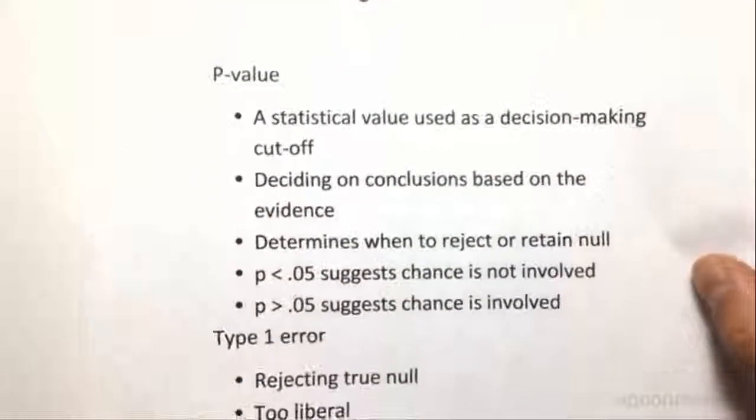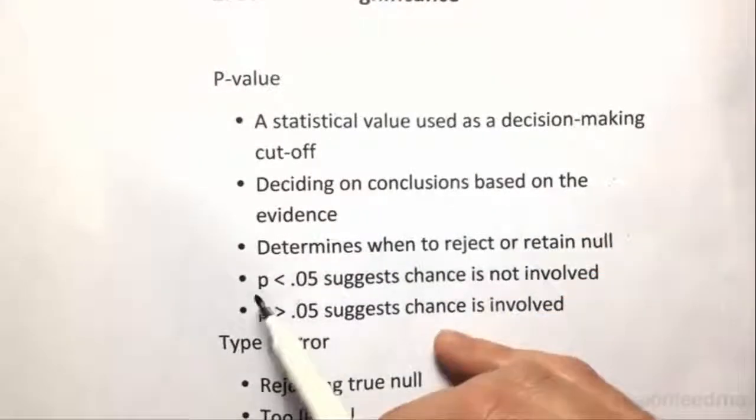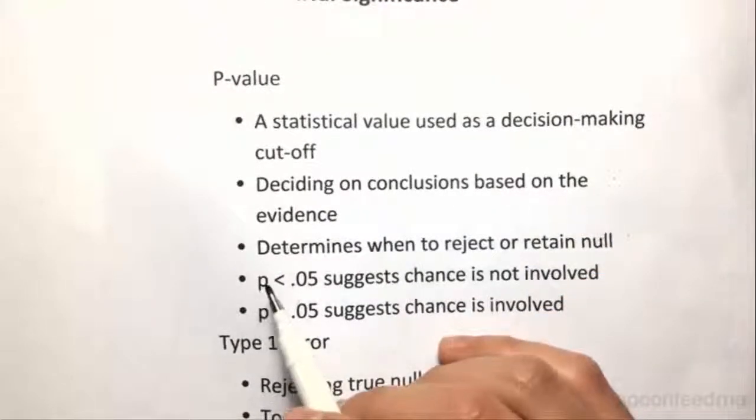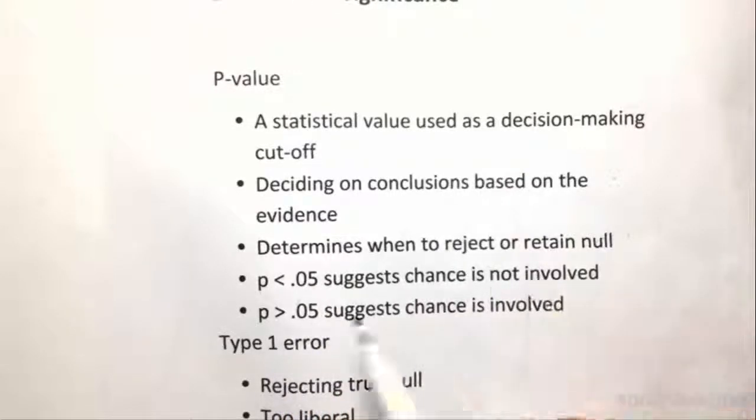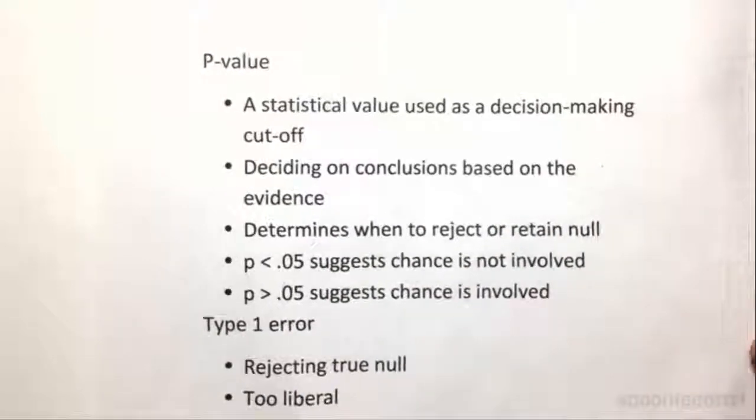Now, if we look back at what we have here, in words, all you have to remember is that a p-value of less than 0.05 suggests that chance is not involved, and greater than 0.05, chance is involved.